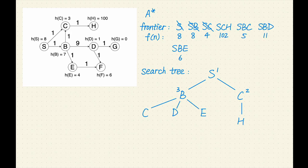Next, SBC has the lowest F value of 5. Let's remove SBC from the frontier. C is not a goal, let's expand it. C has one successor, H. Let's add SBCH to the frontier. The F value is 103.